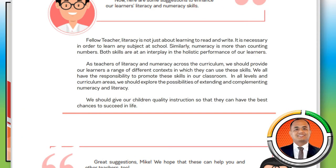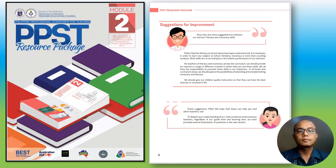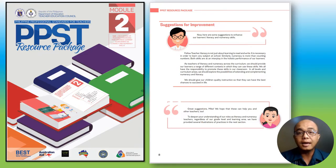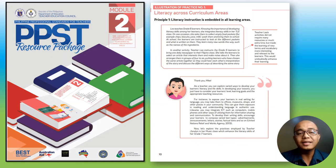Literacy and numeracy are not just about reading, writing, and counting numbers. Both are important to the overall learning of children and we need to promote them in all subjects. As teachers, it is our responsibility to provide proper instruction and context for these skills to help children succeed in life. To deepen our understanding on literacy and numeracy, this module gives us several examples and illustrations of practices in these areas. Principle number one: literacy instruction is embedded in all learning areas.